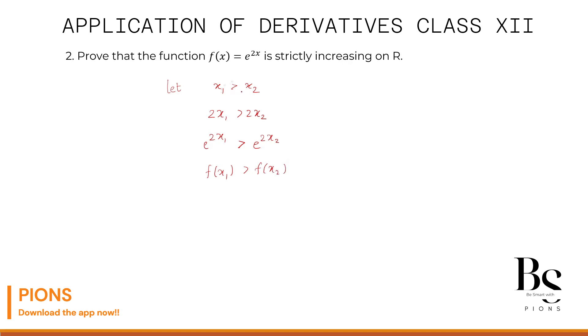Since we started from x1 > x2 and ended up at f(x1) > f(x2), in such situations we say that the given function is strictly increasing.